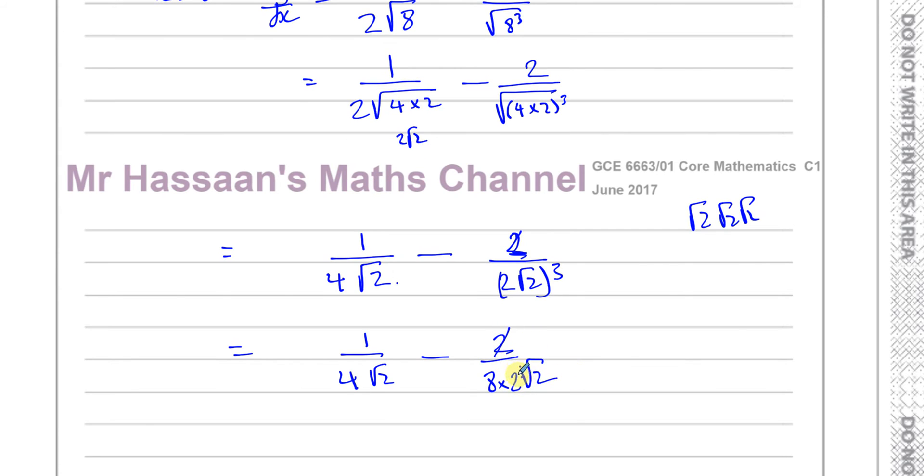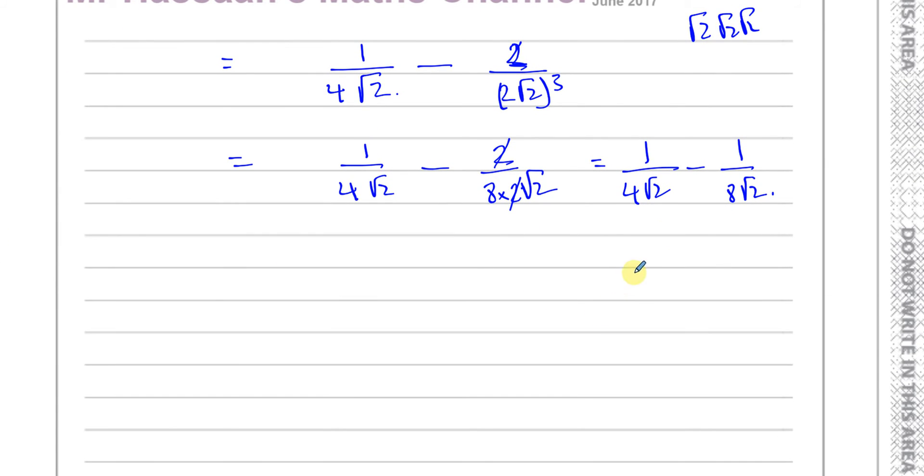Now, what can happen is this 2 and the 2 cancel. So now I'm left with something which we can work with. We have 1 over 4 root 2 minus 1 over 8 root 2. And what I can do here is I can make life a bit simpler by rationalizing the denominator of each of these first. So I can multiply the top and bottom of this by root 2, and the same with this fraction. Just to rationalize the denominator, I'll have root 2 over 4 times 2, which is 8, minus that will be root 2 over 8 times 2, which is 16.